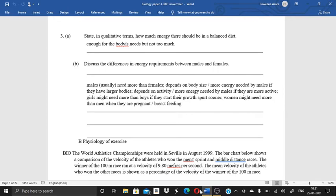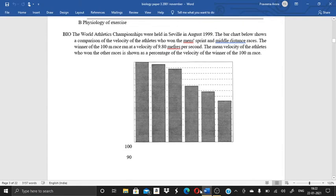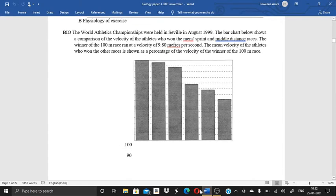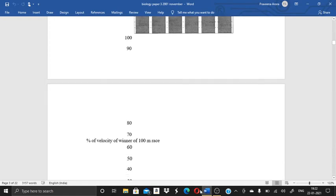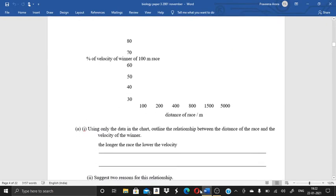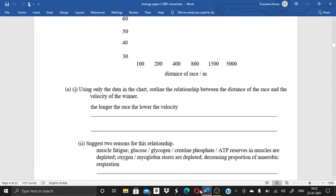Next on the B part, the world athletics championship were held in Seville in August 1999. The bar chart below shows a comparison of the velocity of the athletes who won the men's sprint and the middle distance races. The winners of the 100 meter race ran at a velocity of 9.8 meters per second. The mean velocity of the athletes who won the other races is shown as a percentage of velocity of the winner of the 100 meter race. So over here it has been given and on the basis of it, they have asked the question.